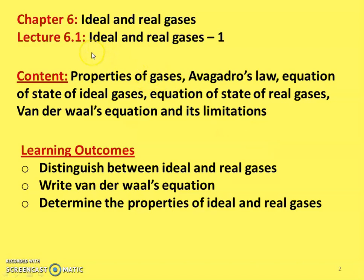Next is Chapter number 6, Ideal and Real Gases. It is lecture number 1 in the Ideal and Real Gases. The topics in lecture 1: we are going to study about Properties of Gases, Avogadro's Law, Equation of State of Ideal Gases, Equation of State of Real Gases, Van der Waals Equation and its Limitations.